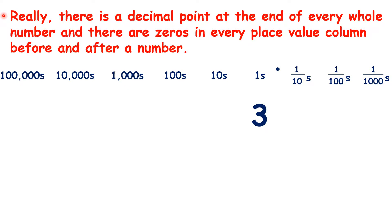Really, there is a decimal point at the end of every whole number, and there are zeros in every place value column before and after a number.